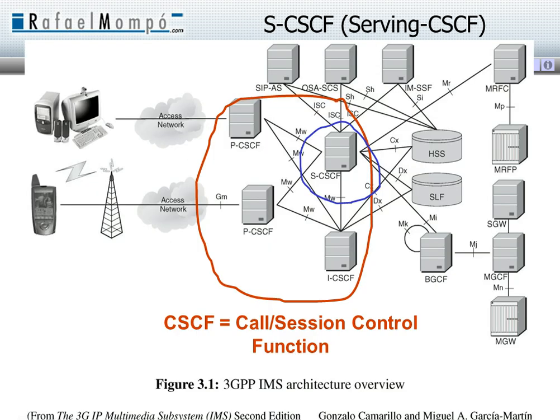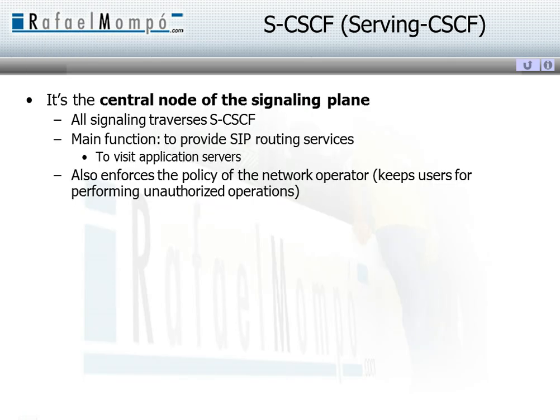The serving call session control is now circled in blue. The serving is the central node of the signaling. Its main function is to provide routing services to the SIP signaling and to withdraw operations that cannot be performed with the assigned network policy.